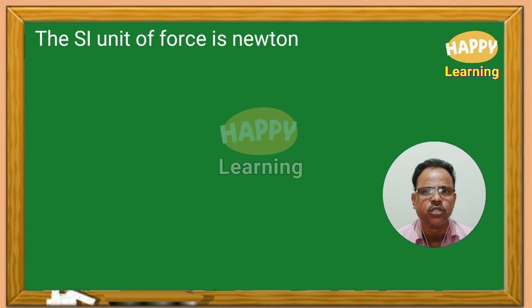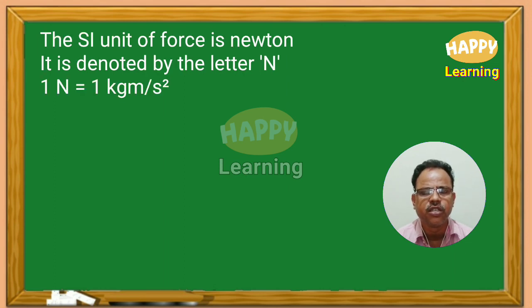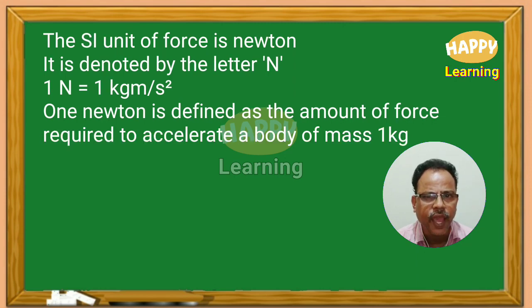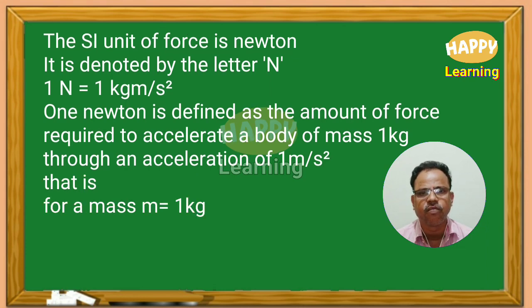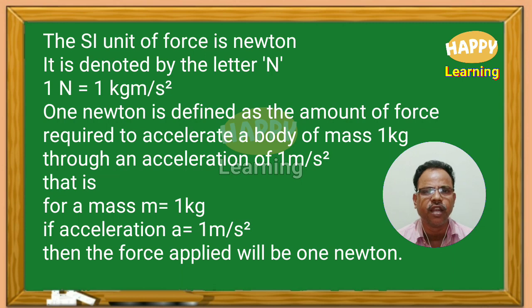The SI unit of force is Newton. When you write the spelling, use a small 'n'. It is denoted by the letter capital N. 1 N is equal to 1 kg m per second squared. 1 N is defined as the amount of force required to accelerate a body of mass 1 kg through an acceleration of 1 m per second squared. That is, for mass M = 1 kg, if acceleration A = 1 m/s², then the force applied will be 1 N.